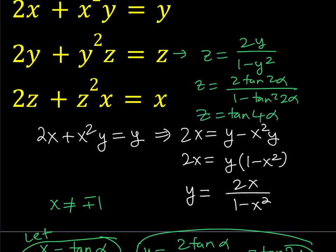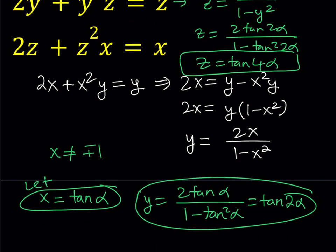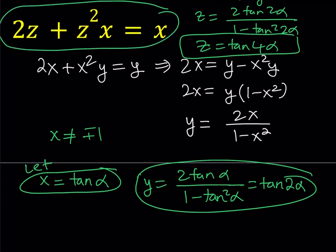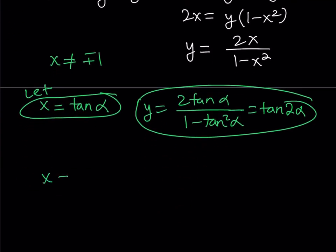So z equals tangent 4 alpha. We still have one more equation to handle. The third equation gives us x in terms of z: x equals 2z over 1 minus z squared.